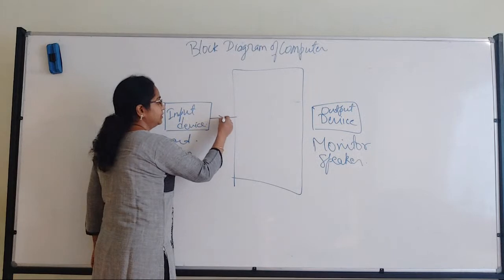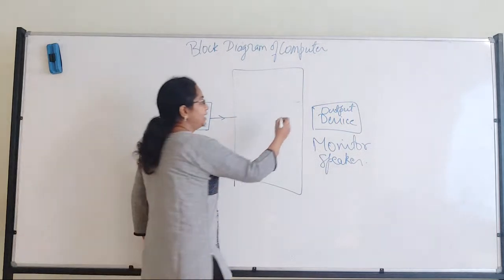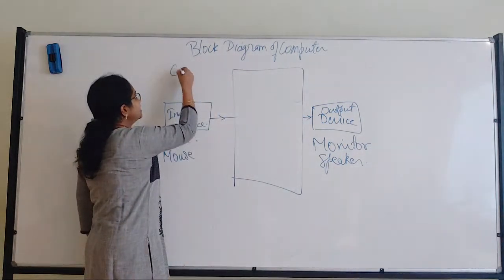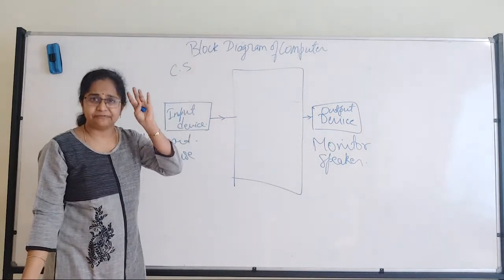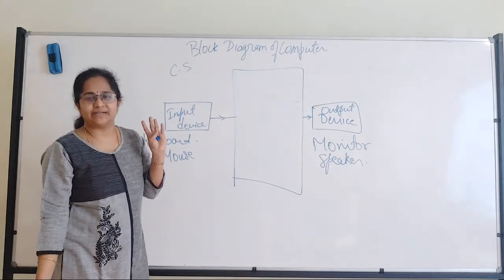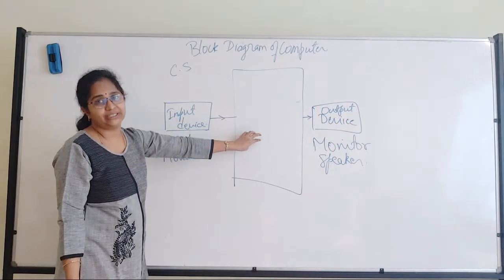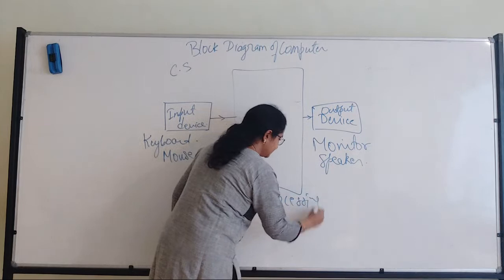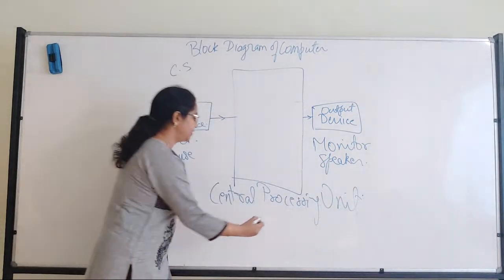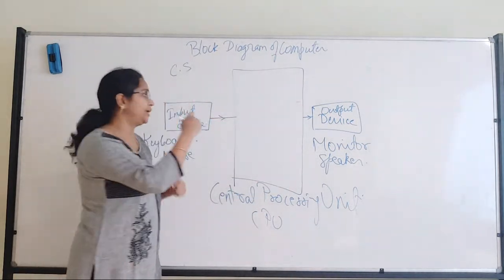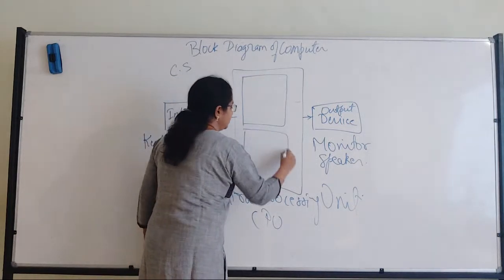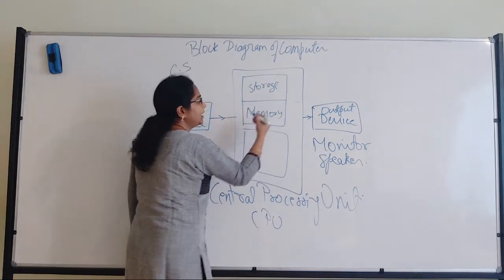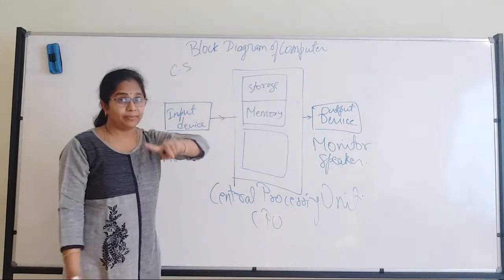Now I just put an arrow — the arrow goes from input to CPU because data is moving in that direction. You just apply common sense. CS is computer science and common sense — both start with C. Apply common sense and the answer will come automatically. Now you all know what CPU is — it is the Central Processing Unit. How do we divide this? We divide it into two parts: first is storage and memory, and the second block consists of ALU and Control Unit.